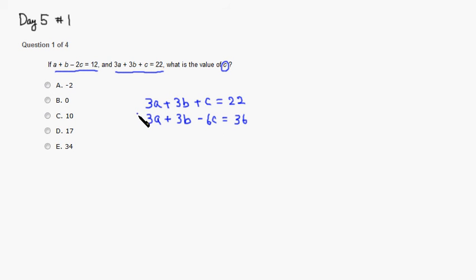Then what we can do is we can just subtract the second equation from the first equation. So 3a, 3a cancel out. 3b minus 3b cancel out. c minus negative 6c, so it's going to be addition. So 7c is equal to 22 minus 36 is going to be negative 14.